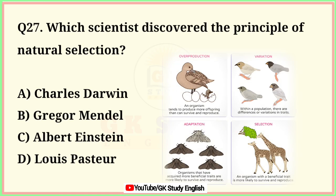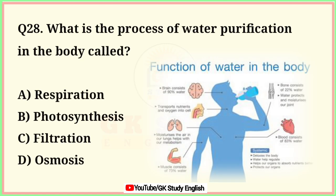Question number 27. Which scientist discovered the principle of natural selection? A. Charles Darwin. B. Gregor Mendel. C. Albert Einstein. D. Louis Pasteur. Correct answer is option A. Charles Darwin.